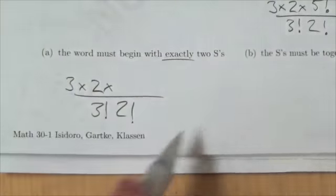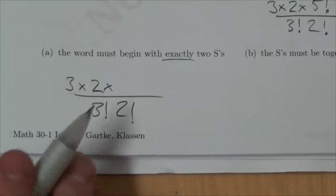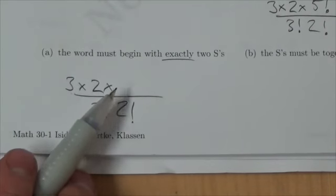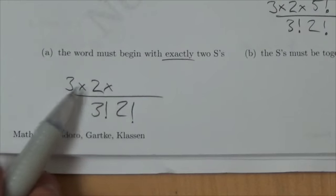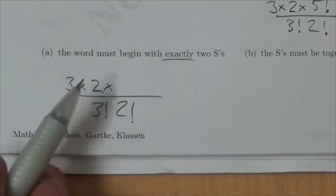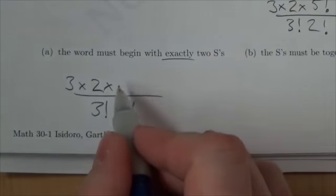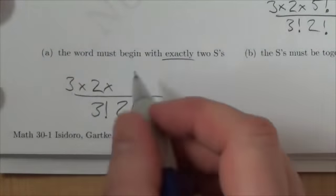I can't just randomly choose any old letter now for the next position because what if I choose that last S? If I do, then I'm not starting with two S's. I'm starting with three S's. So I have to make sure that that third position isn't an S.